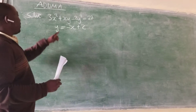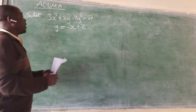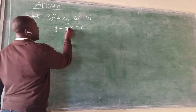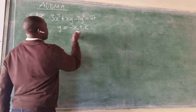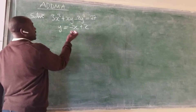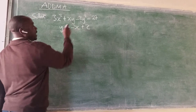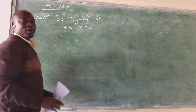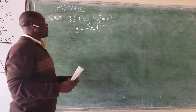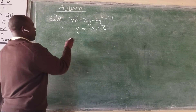So our job is to take that equation and fuse it into the first equation. Wherever there is y in the first equation, we are going to replace it with negative x plus 2, since we are told y is equal to negative x plus 2.